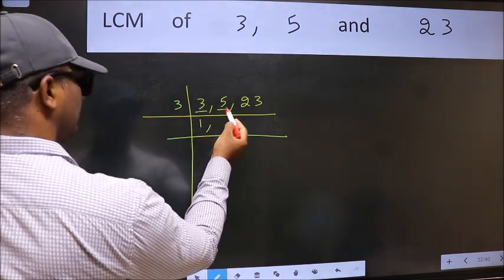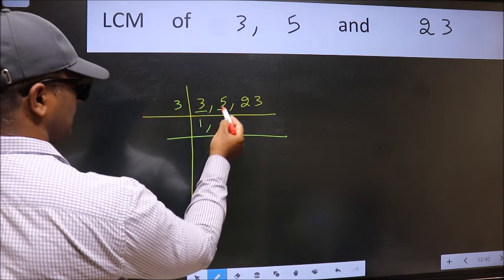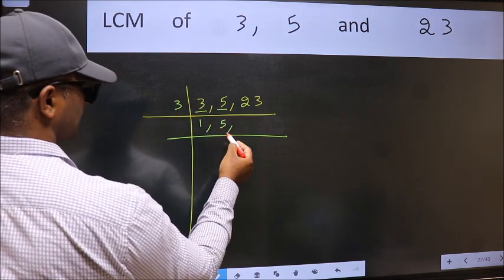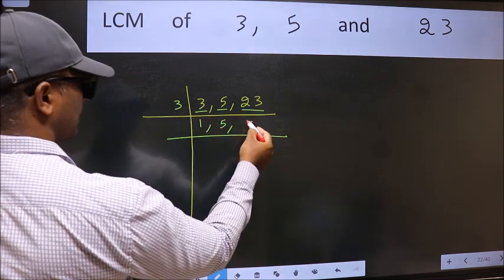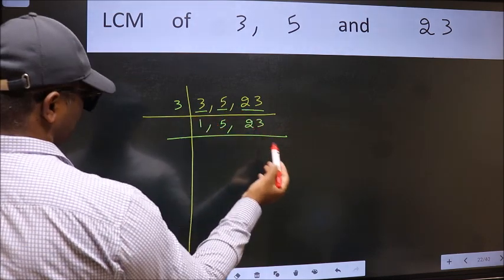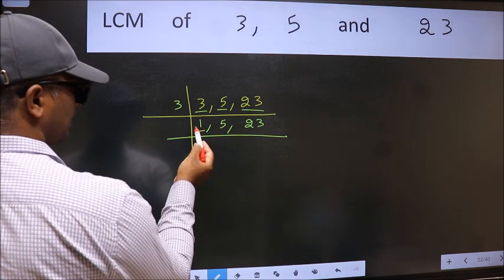The other number 5 not divisible by 3 so we write it down as it is. The other number 23 not divisible by 3 so we write it down as it is. Now we got 1 here.